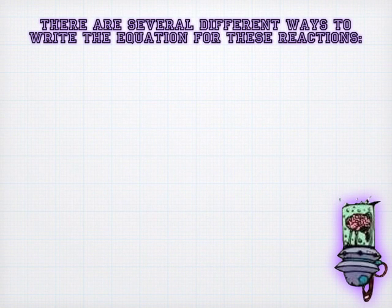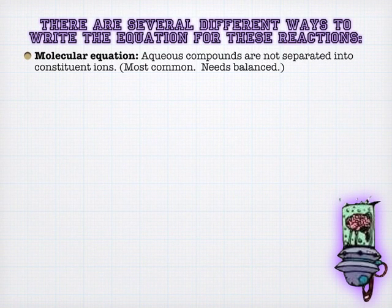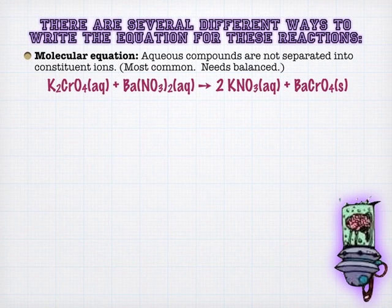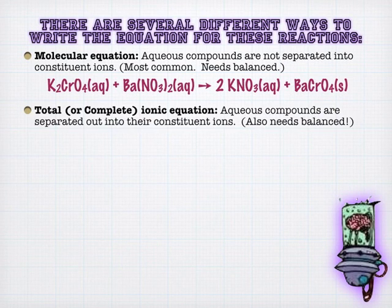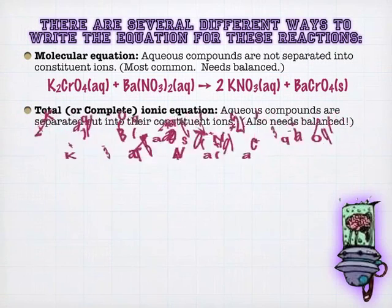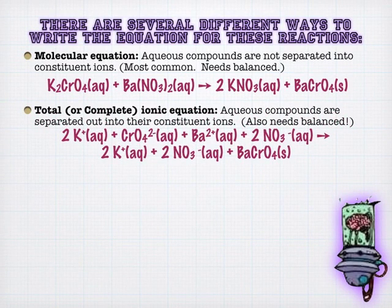And so what we can do is we can actually write this several different ways. The way you're probably most used to seeing it is a molecular equation, just simply writing out the compounds. And now we balance them. So I went ahead and balanced it for you there, but you need two potassium nitrates. Again, this is where you're going to start balancing based on the polyatomics that show up on both sides. So don't break these up into oxygens and nitrogens. Look for the nitrates on both sides. You had two on the left, so you obviously need two on the right. And then that two will also take care of the potassium on the left. This is what you'll see most of the time.